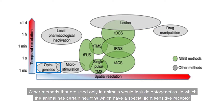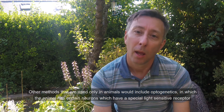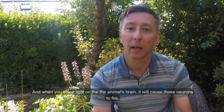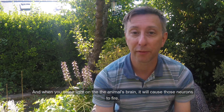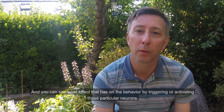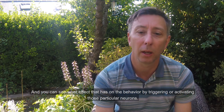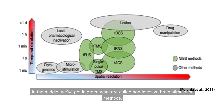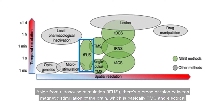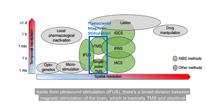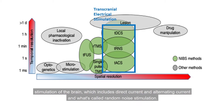Other methods used only in animals include optogenetics, in which certain neurons have a light-sensitive receptor inserted genetically. When you shine light on the animal's brain it causes those neurons to fire, and we can see what effect that has on behaviour. In the middle of the diagram, in green, are non-invasive brain stimulation methods. Aside from ultrasound stimulation, there's a broad division between magnetic stimulation — basically TMS — and electrical stimulation, which includes direct current, alternating current, and random noise stimulation.